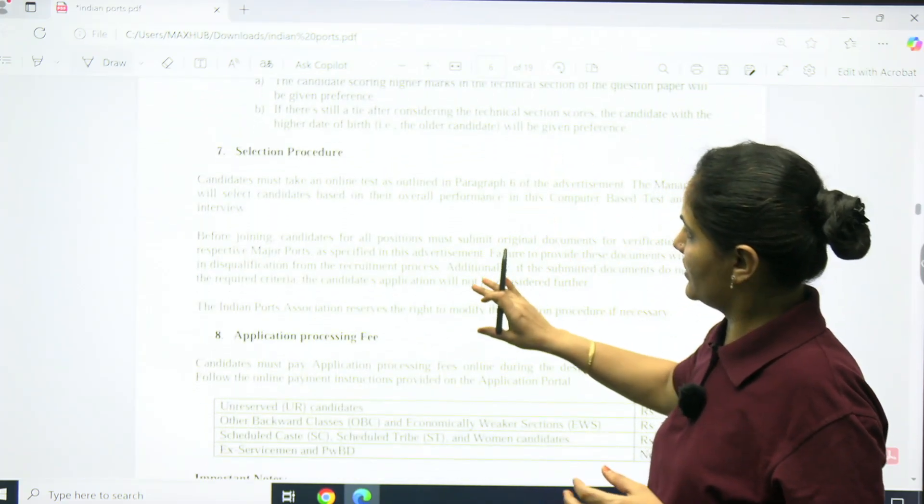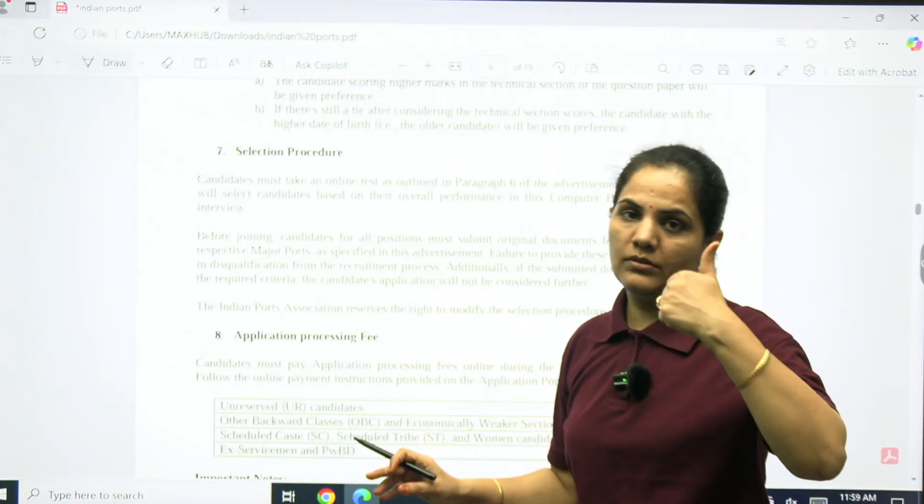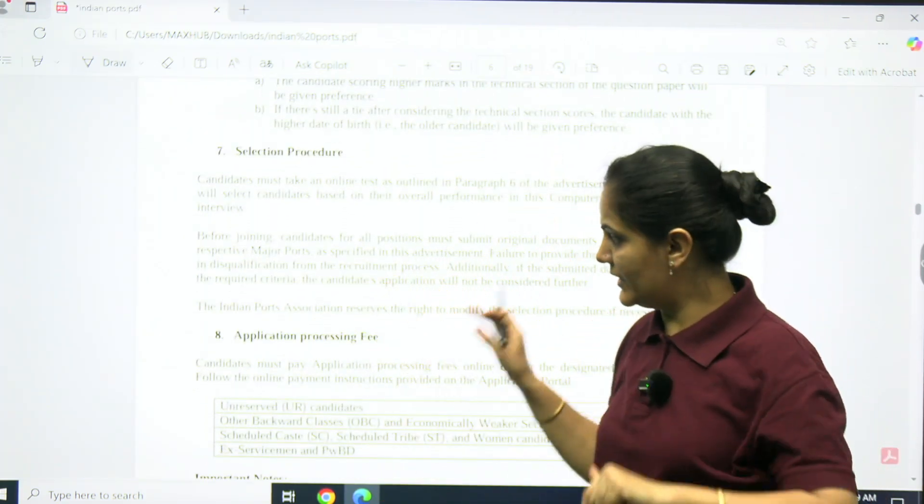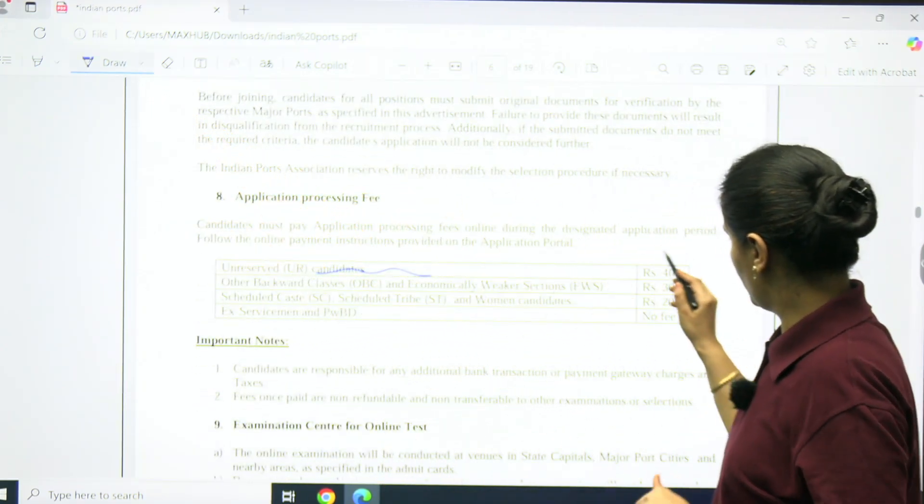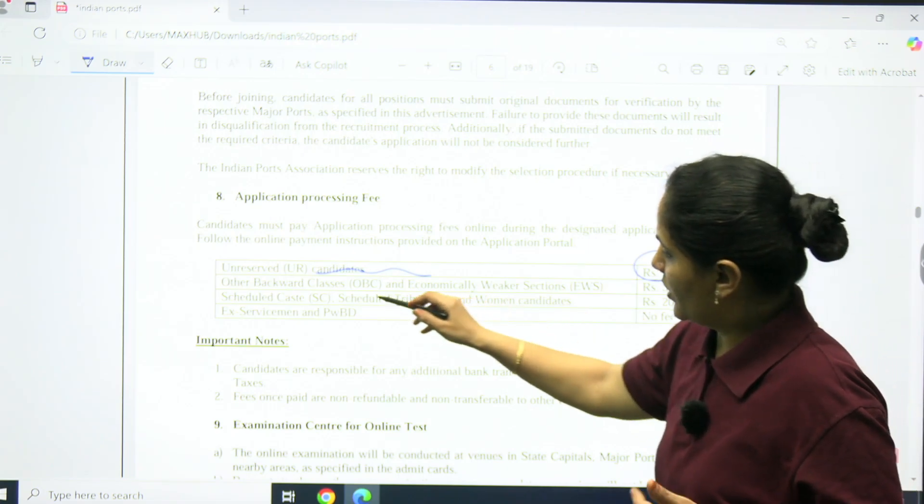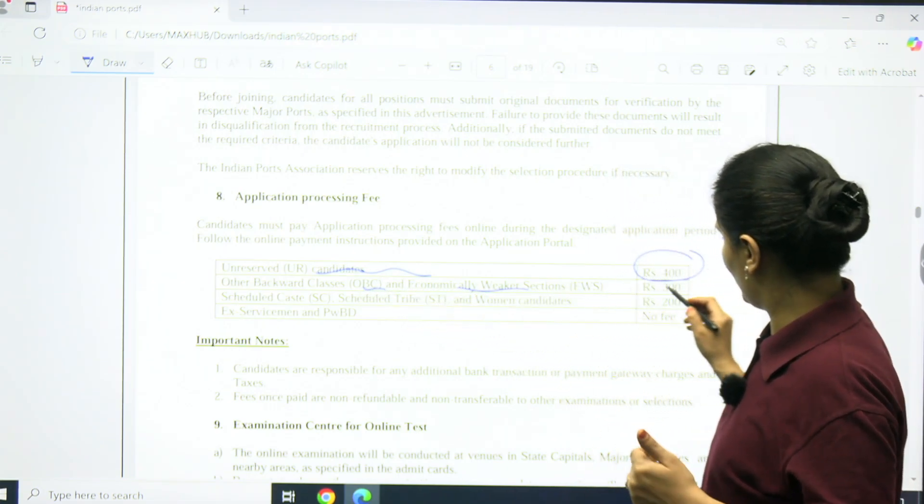Selection process as I told you already: basic requirement, then CBT test will be there. Application processing fees, for unreserved candidates, rupees 500. For OBC and other EWS category, 300 rupees.